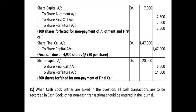Continuing Anil's forfeiture entry: Share Capital Account debited 7,000; to Share Allotment Account 2,500 (not paid); to Share First Call Account 2,000 (not paid); to Share Forfeiture Account 2,500 — the amount actually received, which is 25 rupees of application on 100 shares. If a Calls in Arrears account is opened, credit it with 4,500 (2,500 + 2,000) instead.